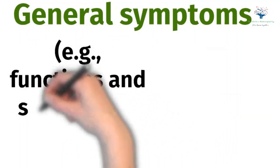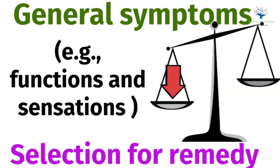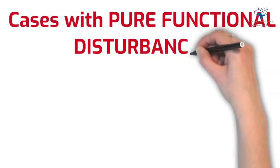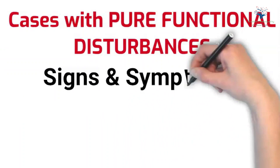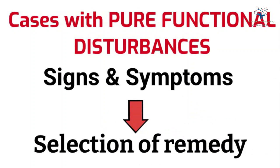Only what we perceive in the patient in general — for example, his functions and sensations — is worth considering for selection of a remedy. Kent then discusses cases with pure functional disturbances, that is, where morbid anatomy or pathological changes in tissues have not come yet. In such cases, the signs and symptoms clearly indicate the remedy and the physician prescribes it.